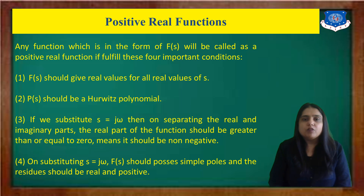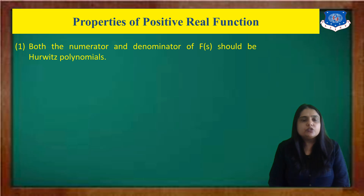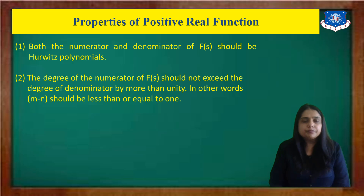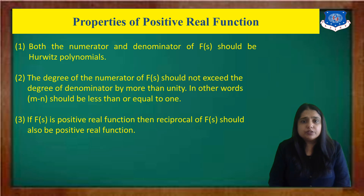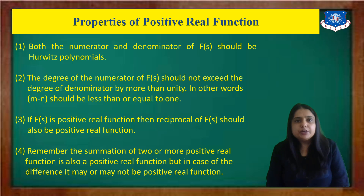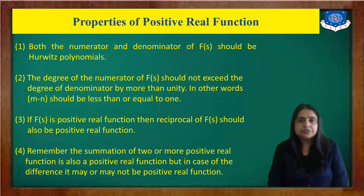This topic — what is a positive real function — can be asked for 4 marks. The properties of positive real functions are: both numerator and denominator should be Hurwitz polynomials; the degree of the numerator should not exceed the degree of the denominator by more than one (m−n ≤ 1); if F(s) is a positive real function, its reciprocal is also a positive real function; and the sum of two or more positive real functions is always a positive real function, but this is not necessarily true for the difference.